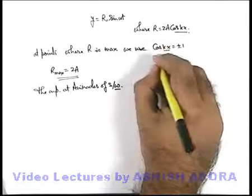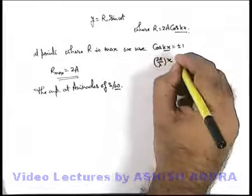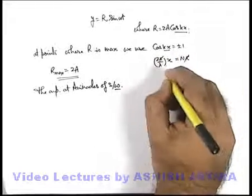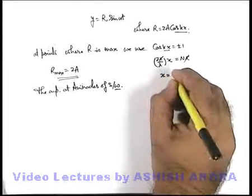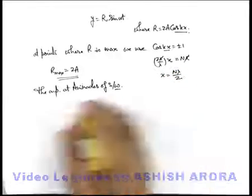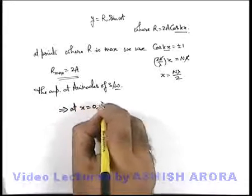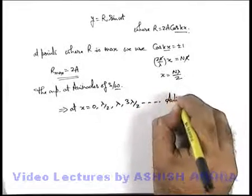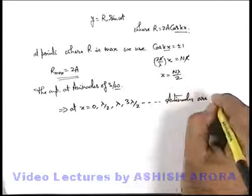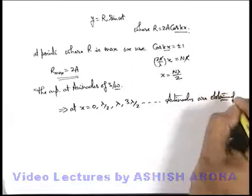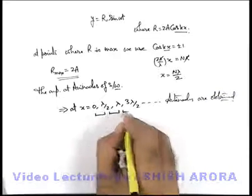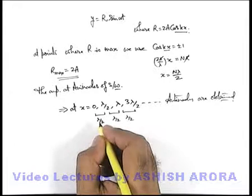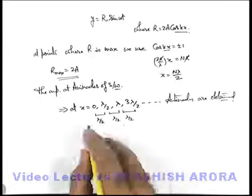In this case, writing k as 2π/λ, we get (2π/λ)·x = nπ, so x = nλ/2. This implies that at x = 0, λ/2, λ, 3λ/2, and so on, anti-nodes are obtained. You can see that the separation between any two successive anti-nodes is λ/2, which is the same result we discussed qualitatively in the initial section on stationary waves.